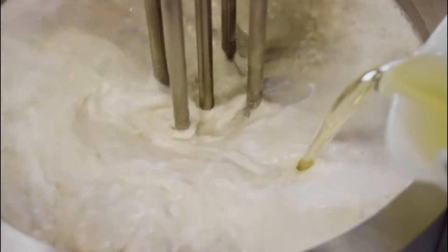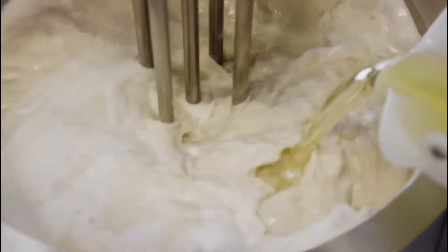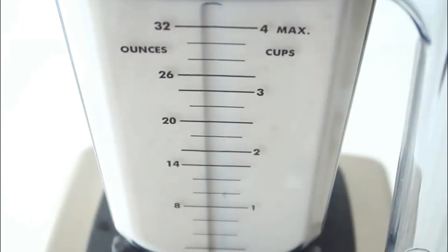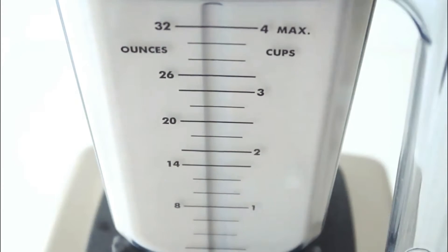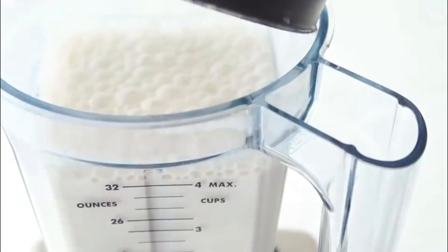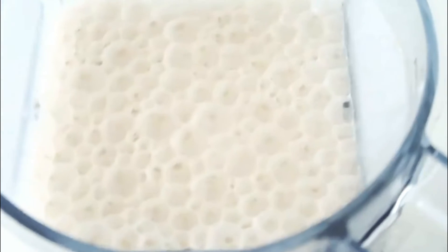In the heart of the factory, the ground oats are blended with pure, crystal-clear water, giving rise to a velvety-smooth oat milk base that serves as a blank canvas for culinary exploration.